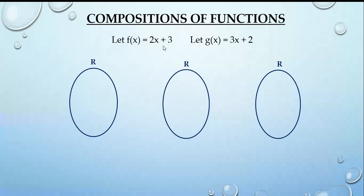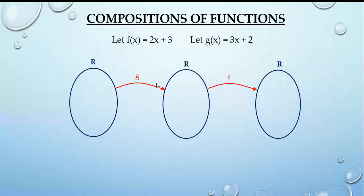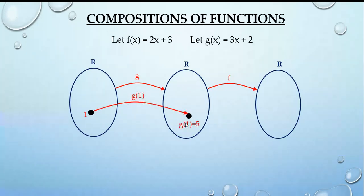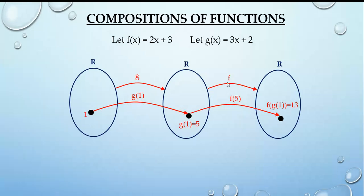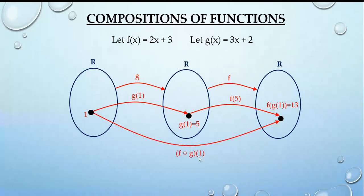Consider again f(x) = 2x + 3 and g(x) = 3x + 2, where both functions are from ℝ to ℝ. Taking the element 1 in the domain of g: g(1) = 5. Since 5 is in ℝ, which is the domain of f, we compute f(5) = 13. So f composition g at 1 gives f(g(1)) = 13, mapping from ℝ to ℝ.